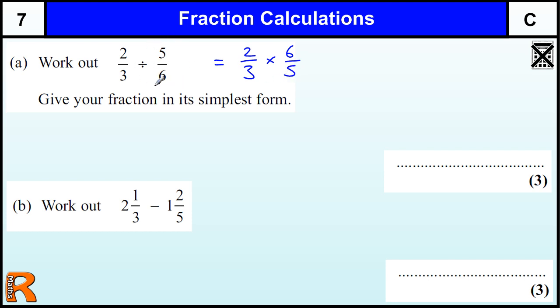So if we divide by 5/6, that's the same as multiplying by 6 over 5. It's only this last bit that gets turned upside down. This bit stays the same.